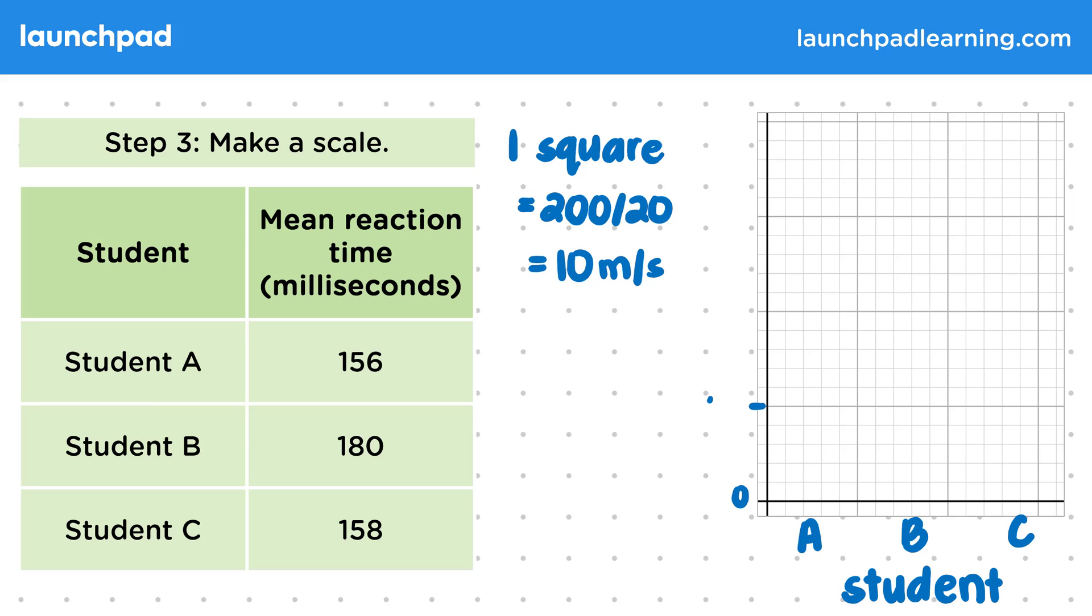Make sure that you write the tiny marker lines next to these numbers so that there's no doubt which place on the graph the number refers to. This frequently leads to lost marks in the exam.